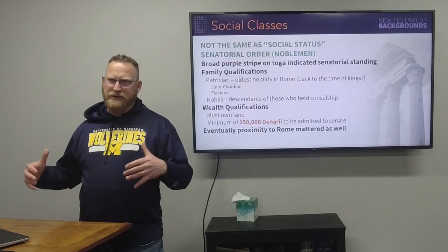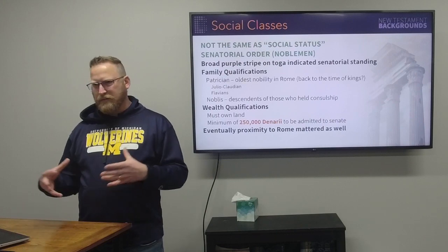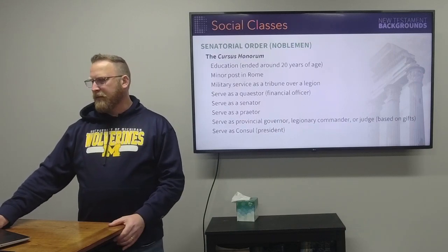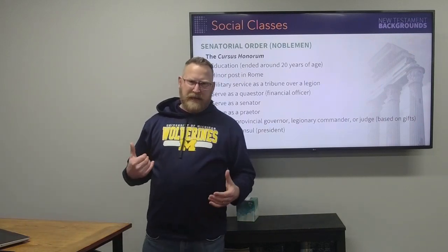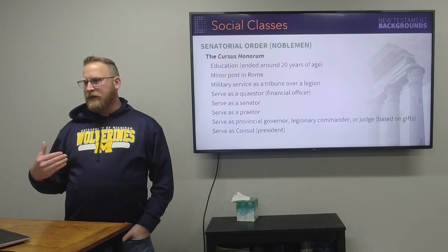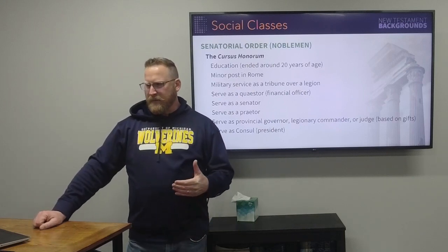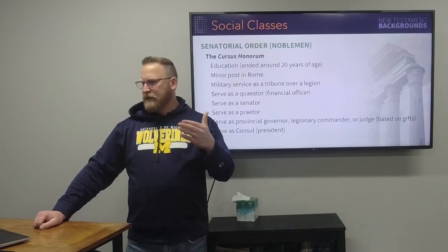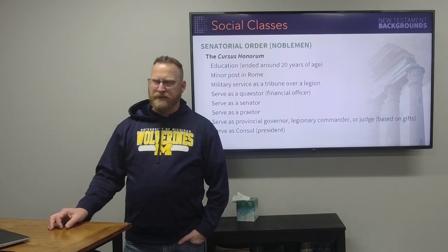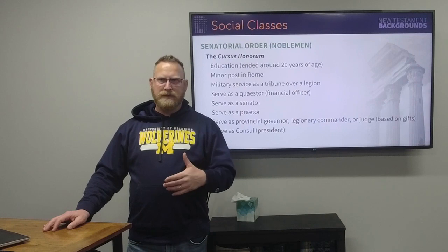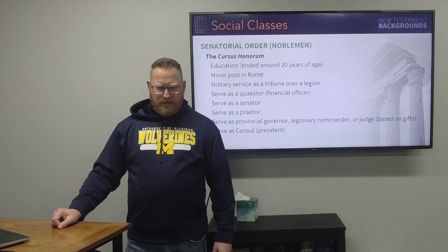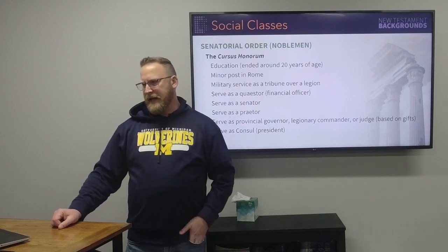Eventually, as Rome became a larger empire, how close you were to Rome geographically became important for whether you could serve in the Senate. If you were born into the senatorial class and expected to continue in that line, you started what's called the cursus honorum — the process by which you would move up the political ladder step by step. The first step was your education, which usually ended around age 20, after which you would take a minor post in Rome, such as collecting taxes or keeping track of regulations.